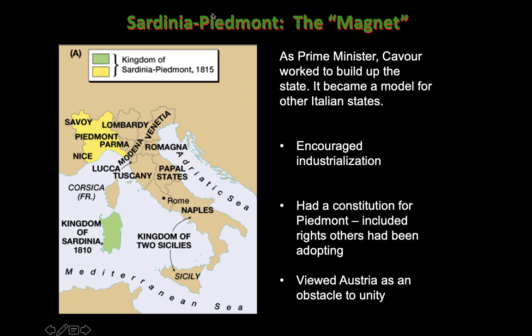Cavour in the 1850s builds up this state with industrialization, modern ideas, like a constitution embodying Enlightenment ideals. He sees a problem: Lombardy and Venetia in the north are really influenced by — actually run and controlled by — Austria.